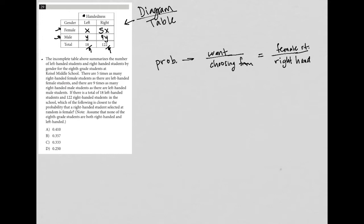So how many female right handed students are there? Well, it is 5X. So that's my numerator. How many right handed students are there to choose from? It is 122. So there's my probability. The problem is I still have this X term, so I can't actually solve the probability yet.